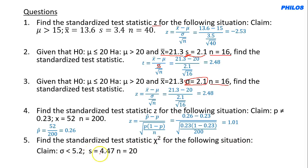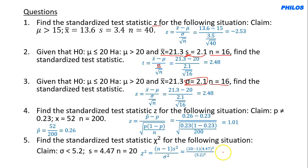Question 5: Find chi-square given s = 4.47, n = 20, σ = 5.2. Using χ² = (n−1)s² / σ²: χ² = (20−1)(4.47²) / (5.2²) = 19 × 19.98 / 27.04 = 14.04. If the question gives variance directly instead of standard deviation, substitute it without squaring again.